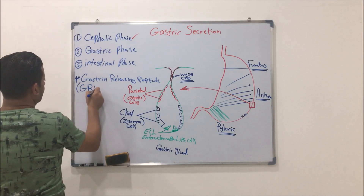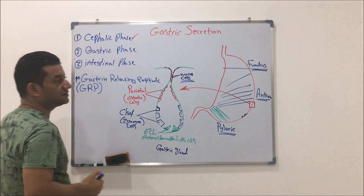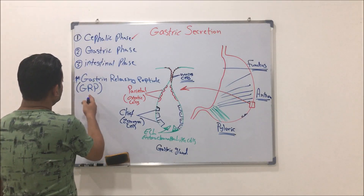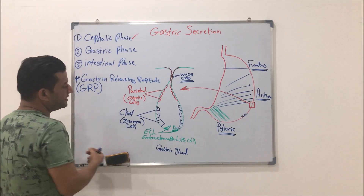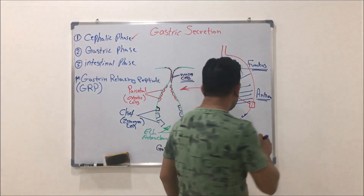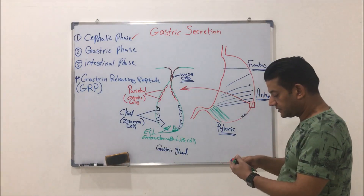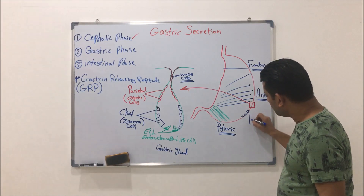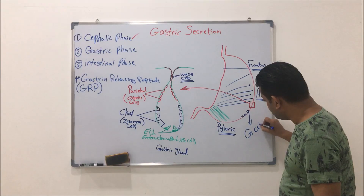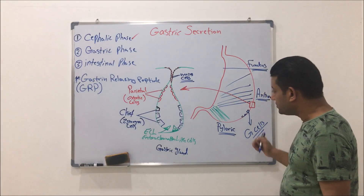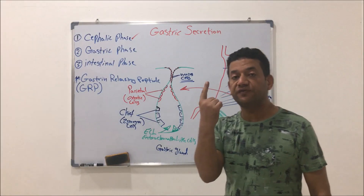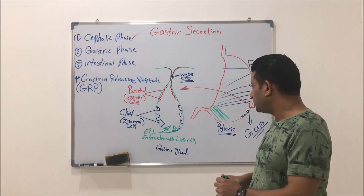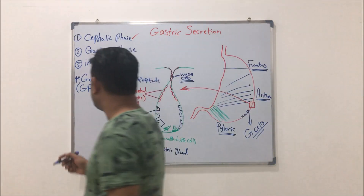Gastrin releasing peptide, also called GRP or sometimes bombazine, stimulates specific types of cells in the wall of the stomach called G cells. The G cells then secrete the first and most important factor, which is the hormone gastrin.